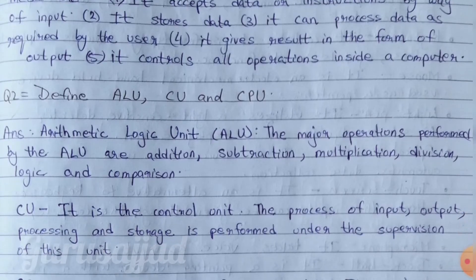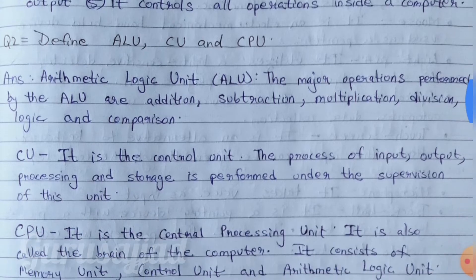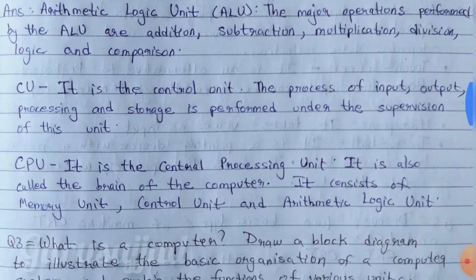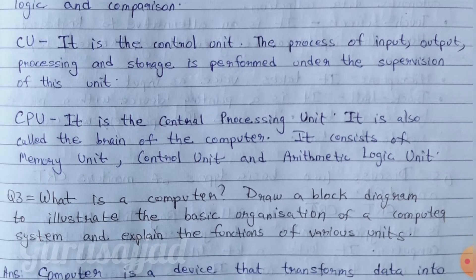Question no. 2: Define ALU, CU and CPU. Answer: ALU means Arithmetic and Logic Unit. The major operations performed by the ALU are addition, subtraction, multiplication, division, logic and comparison. CU is the Control Unit — the process of input, output, processing and storage is performed under the supervision of this unit. CPU is the Central Processing Unit. It is also called the brain of the computer. It consists of memory unit, control unit and arithmetic logic unit.